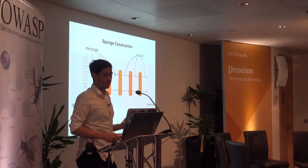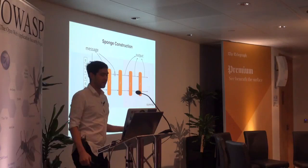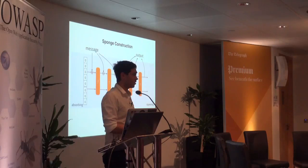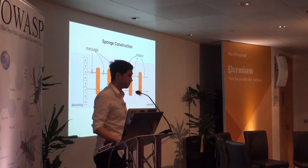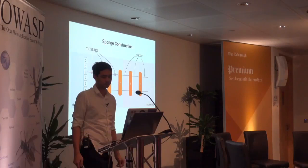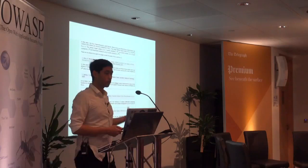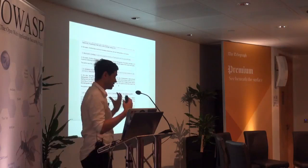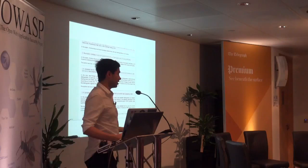There is a paper proof that the sponge construction is secure, as long as the permutation at its core is secure. How do we know the permutation is secure? The only way is to try to break it — linear cryptanalysis, differential cryptanalysis, all known attacks, and try to invent new ones. That's why the competition lasted five years. SHA-3 has received a lot of cryptanalysis; there's a page on their website listing all the papers trying to break SHA-3 or Keccak. That's one reason it was chosen as the winner.